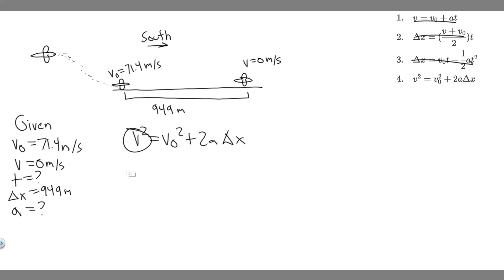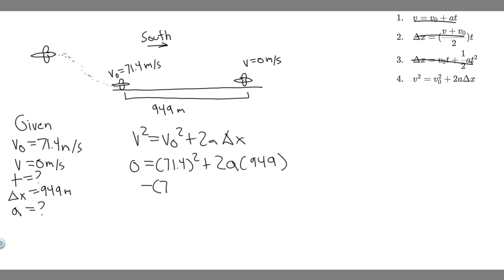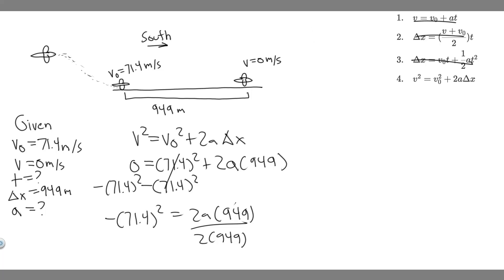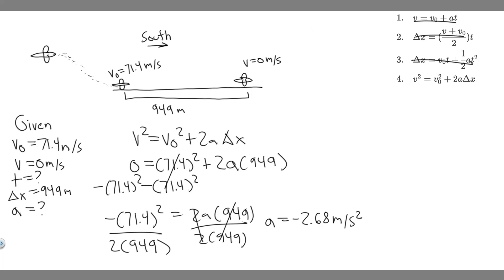Plugging in: v is 0, so zero squared equals 71.4 squared plus 2 times a times 949. Subtracting 71.4 squared from both sides gives negative 71.4 squared equals 2a times 949. Dividing both sides by 2 times 949, we get a equals negative 71.4 squared divided by 2 times 949, which equals negative 2.68 meters per second squared.